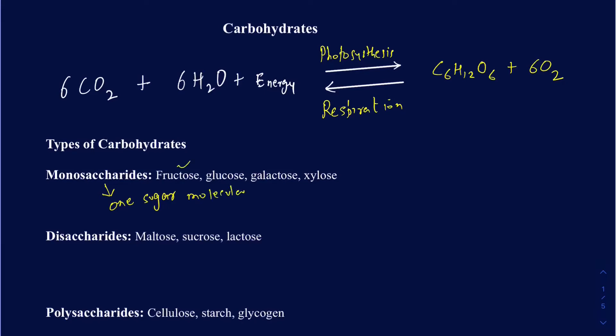For example, we have fructose, glucose, galactose, and xylose, and you can't really break down fructose into another smaller sugar molecule. Same story with glucose, galactose, and xylose. They may have a different number of carbons in the molecule, but these are going to be some of the examples of monosaccharides. Fructose and glucose are obviously the most common ones people will hear.